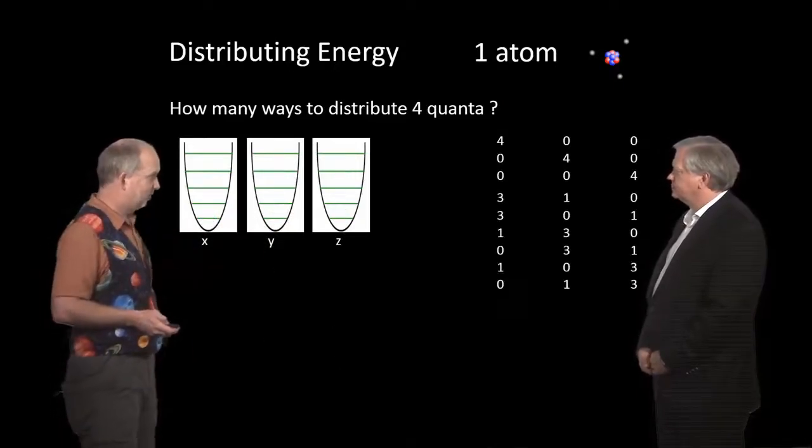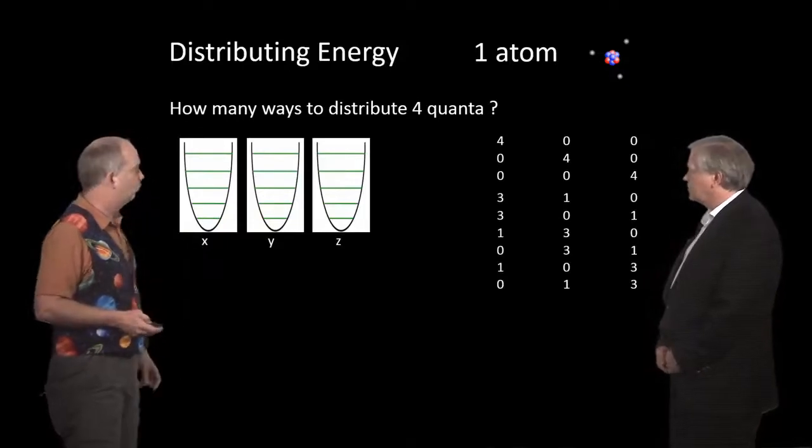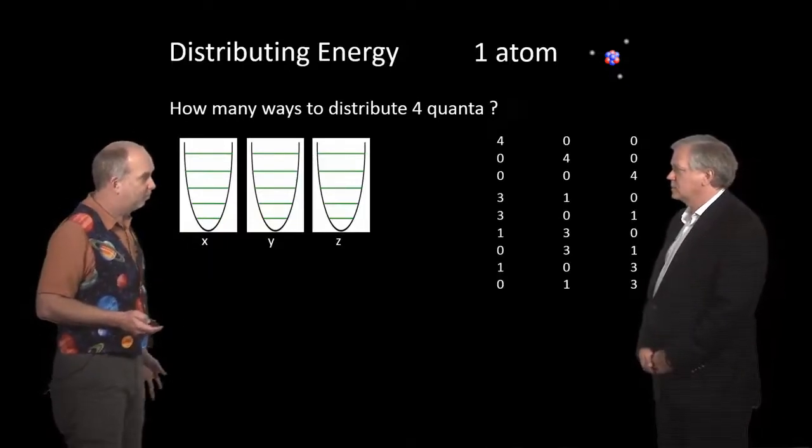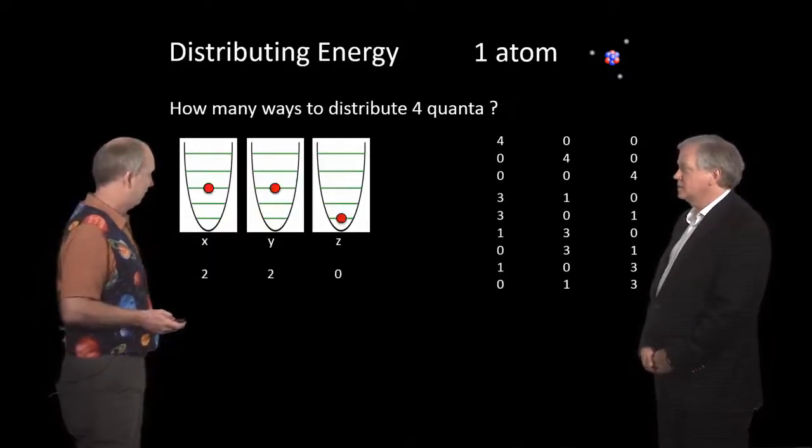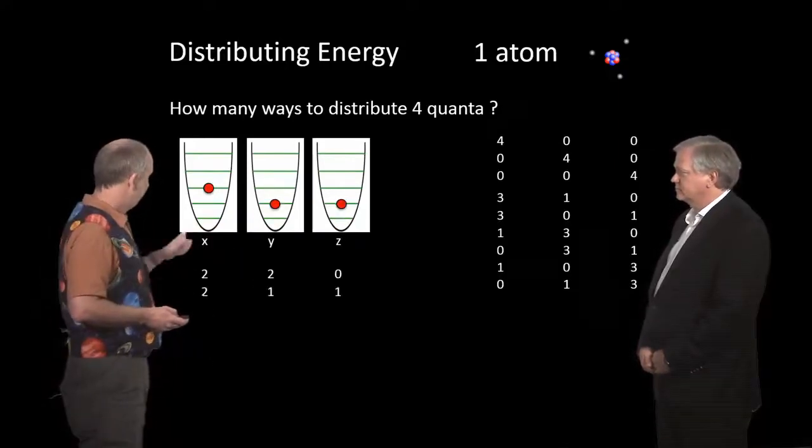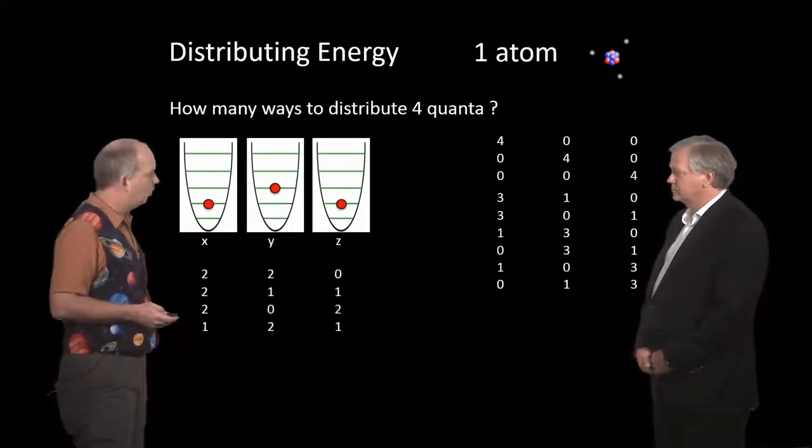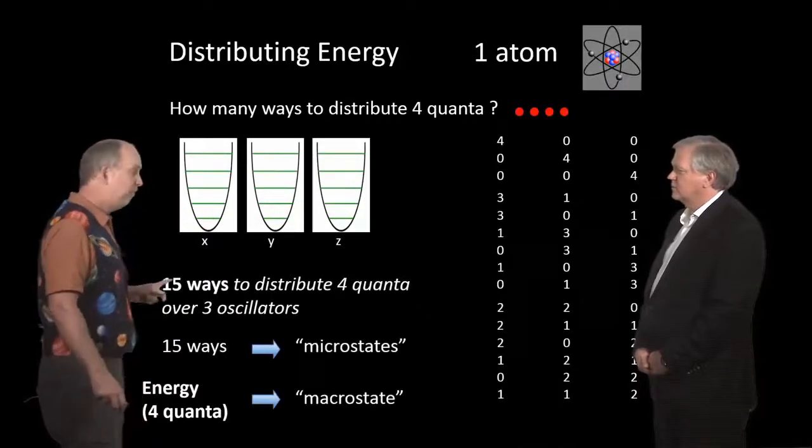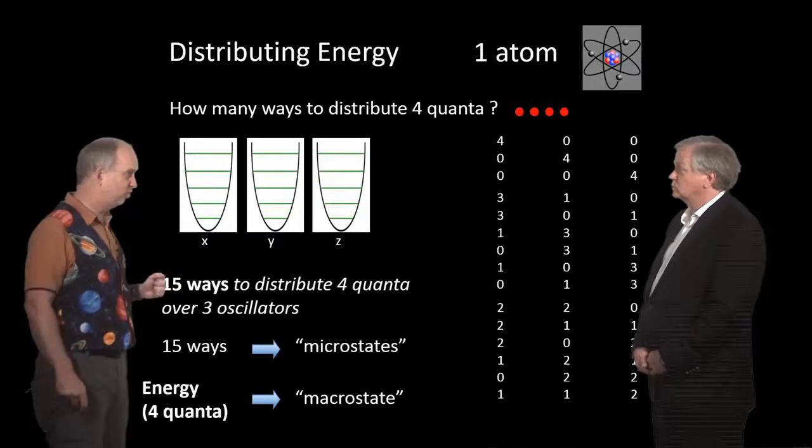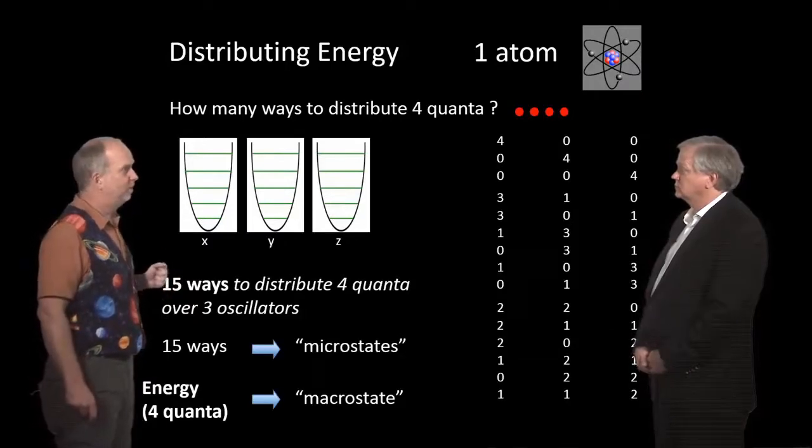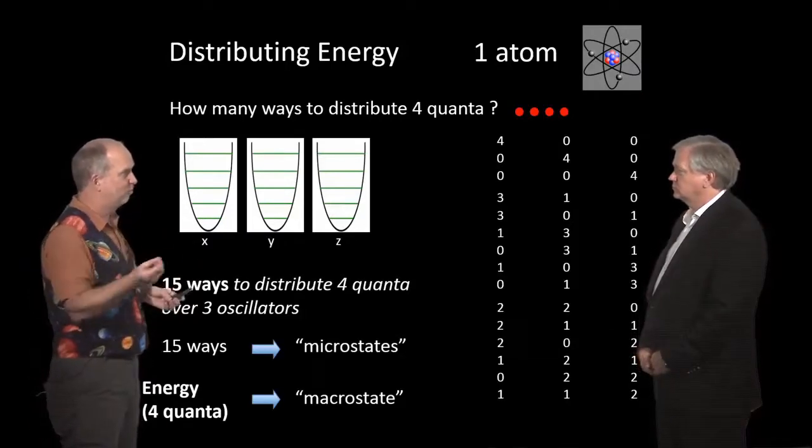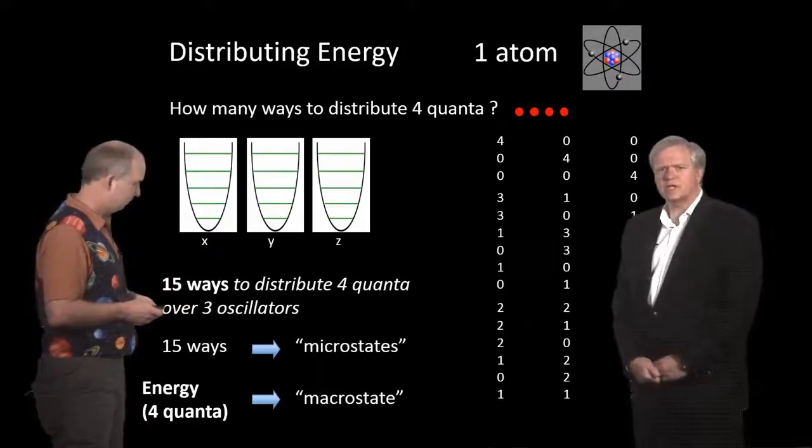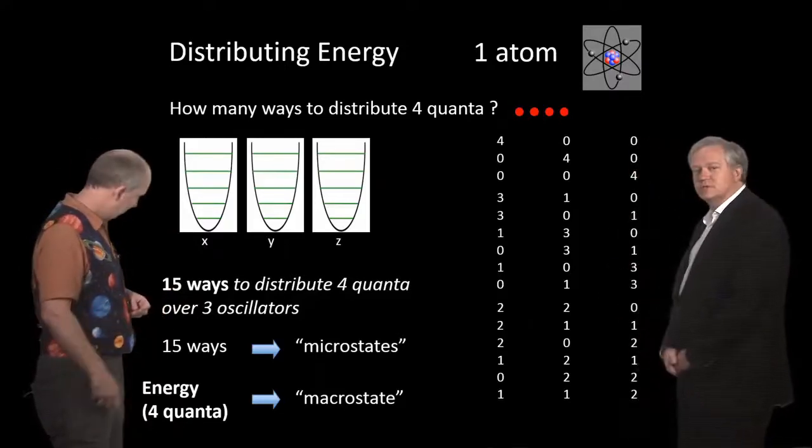This actually gave us six possibilities to add to it. So it went up to nine ways we could do it. But there's even more. So go down: two, two, and zero. Two, one, and one, and so on, and count them all out. We've ended up with 15 different ways in which we can distribute four quanta between, in one atom, between the three directions of motion. And you can go through and count through them all yourself, although we've got the cheat sheet here for you.